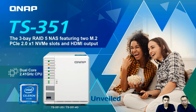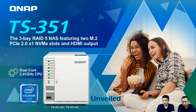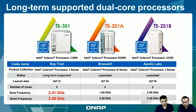The TS-351 is a three-bay NAS with RAID 5. It has two M.2 PCIe Gen 2x1 NVMe slots, so the transmission speed will be faster than SATA. It has a dual-core 2.41 GHz Celeron CPU. The look is the same as our TS-332X and TS-328, but the difference is the front panel, which has two extra LED indicators for the M.2 slots.